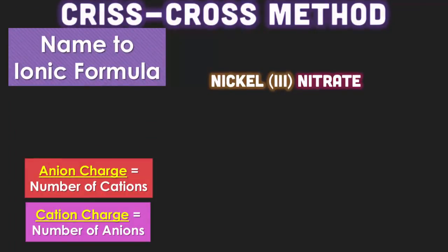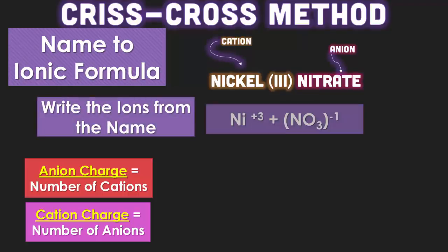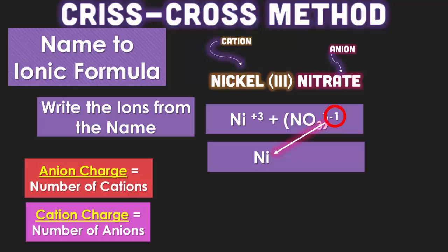We are going to work on the criss-cross method using these transition elements. Here's nickel three nitrate. The nickel three represents that it is a nickel with a positive three charge. And nitrate is as always NO3 with the negative one charge. Same rules apply. The negative one of your nitrate represents you only need one nickel. And the positive three of your nickel says that you need three groups of nitrates. So nickel three nitrate using the criss-cross method can be written out as Ni(NO3)3. And again, this is in the lowest whole ratio.